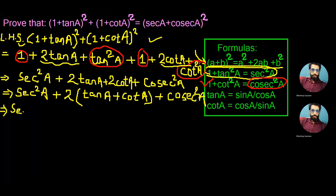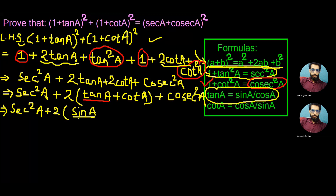Continuing the process, we write sec² a + 2. Now we change tan a into its sine-cosine form: tan a = sin a / cos a. Similarly, cot a is changed into its formula form as cos a / sin a. So inside the bracket we write sin a / cos a + cos a / sin a.